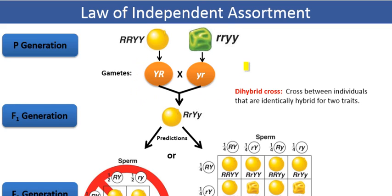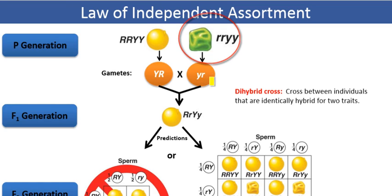The parental line that has green wrinkled seeds will only produce gametes that have the recessive alleles — the small y and small r — used to represent the recessive traits for color and shape respectively.